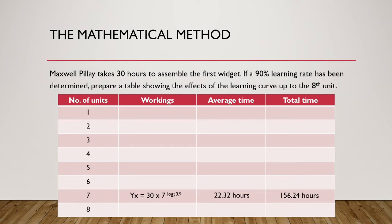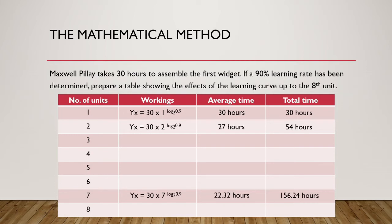Take a moment now to pause this video and calculate the rest of the unit average and total times. For one unit, we get an average time of 30 hours and a total time of 30 hours, as expected. For the second unit, we get an average time of 27 hours and a total time of 54 hours — the same as under the cumulative doubling method. For the first three units, we get an average time of 25.39 hours and a total time of 76.17 hours, which we could not calculate under the cumulative doubling approach.